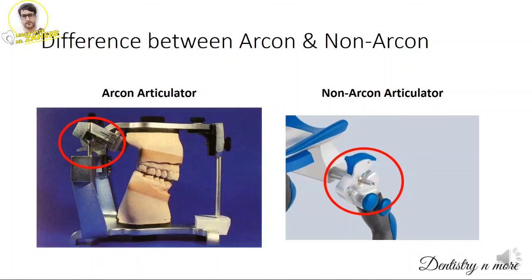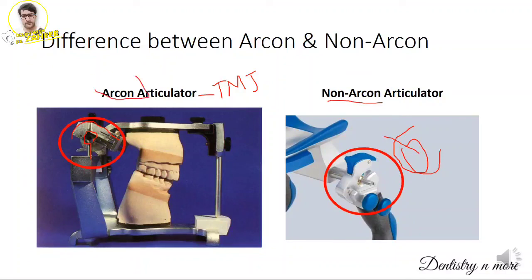The difference between arcon and non-arcon articulators: in an arcon articulator, the condyle is attached to the lower member and the articulating fossa to the upper member, simulating exactly how our joint is present. In a non-arcon articulator, the condyle element is attached to the upper member and the articulating surface to the lower member — the opposite of human anatomy. The term 'arcon articulator' was coined by Bergstrom — another high-value point.